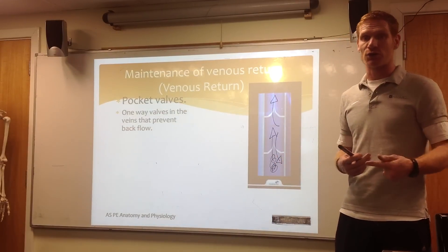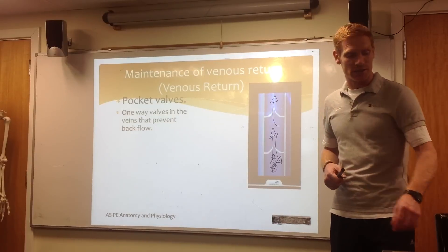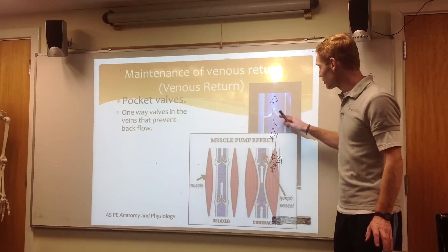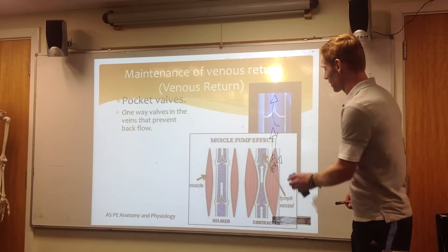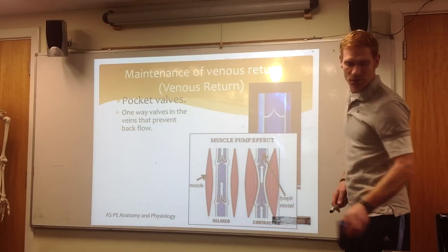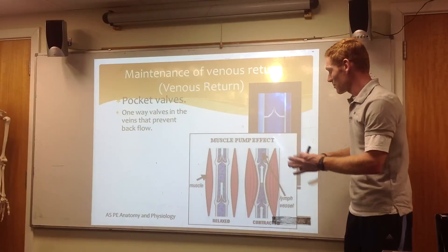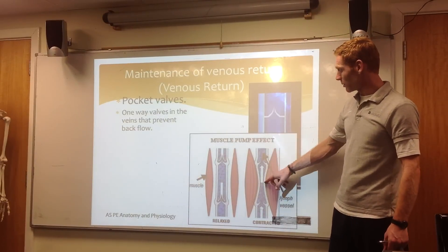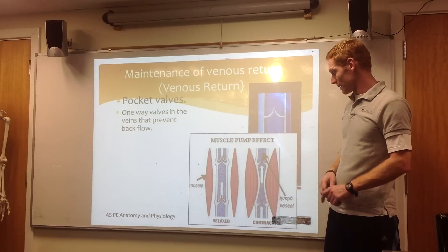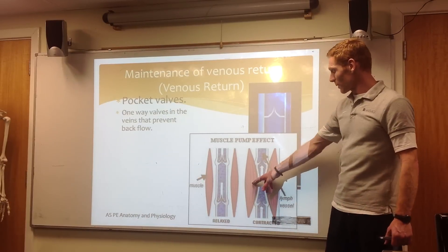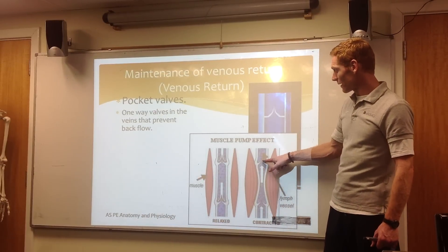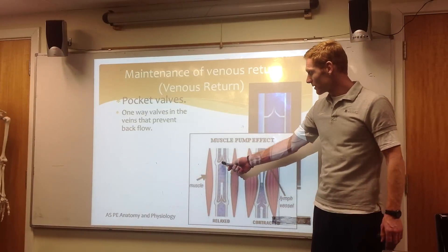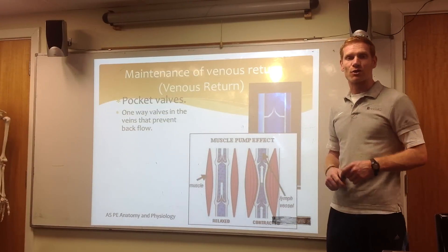Therefore we don't have enough oxygenated blood in the heart. The things that work in conjunction with this are our muscular pumps. As our muscles are actually contracting, it massages and helps the effect of the blood being forced up against gravity. These work completely in conjunction — as the muscles contract, these valves will open; as these muscles relax, these valves will close, therefore stopping the backflow.